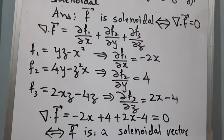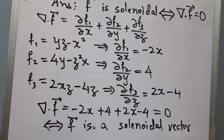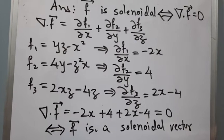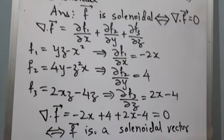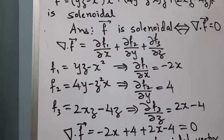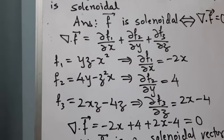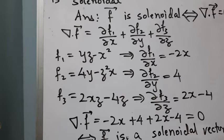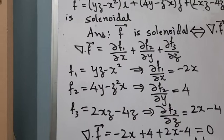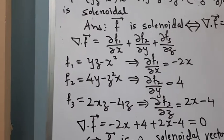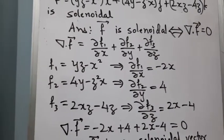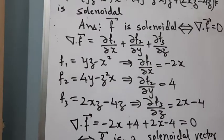If you remember from electrical or electronics class, a solenoid is a coil where the length is much larger than the radius. Here we see that when the rate of entry equals the rate of exit, we call such a vector a solenoidal vector. The name given to each of the physical concepts in vector calculus has a reason behind it.